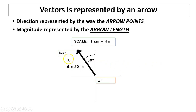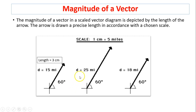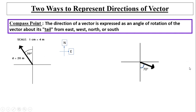A vector has two parts: the head and the tail. The magnitude of a vector is represented by its length. For example, these three vectors are in the same direction but have different magnitudes indicated by the length of the arrow using scale. The first is 50 miles so the arrow length is 3 centimeters; the second is 25 miles so the length is 5 centimeters; the third is 80 miles so the length is 3.6 centimeters.